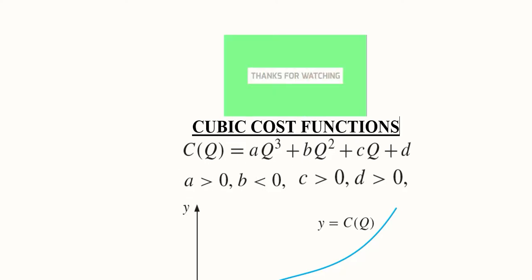We have the parametric conditions: d is considered to be positive, c is also considered to be positive, b is considered to be negative, and a is considered to be positive.